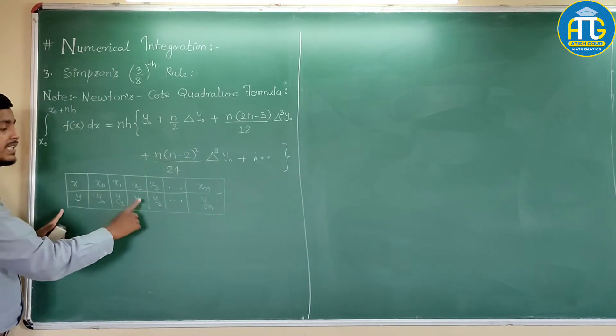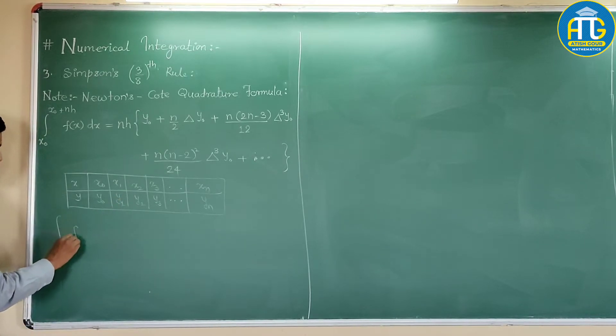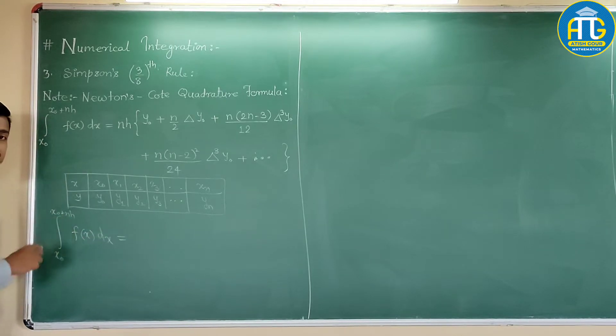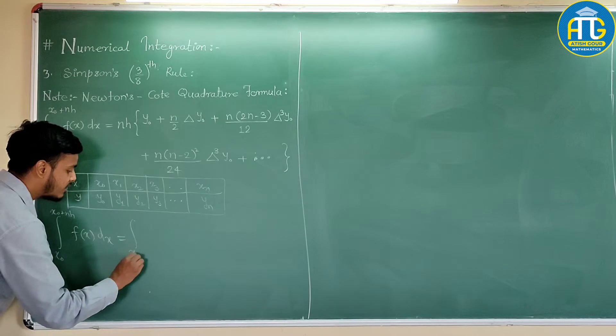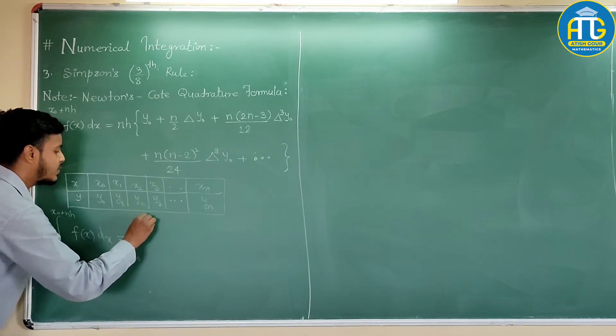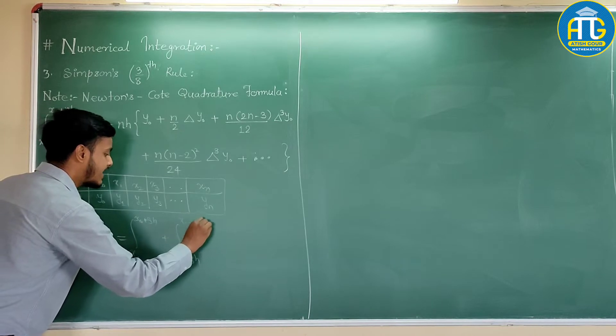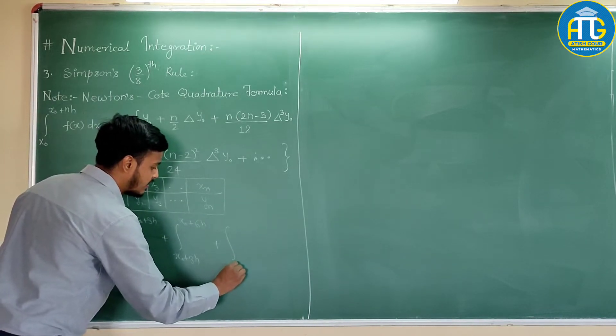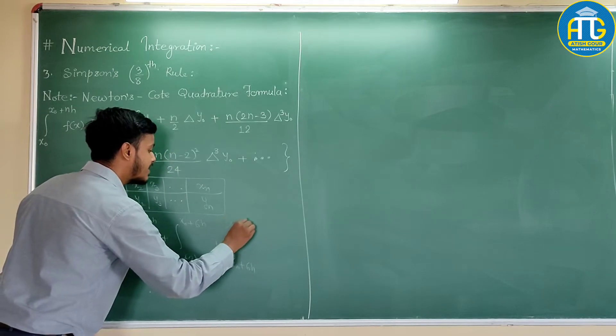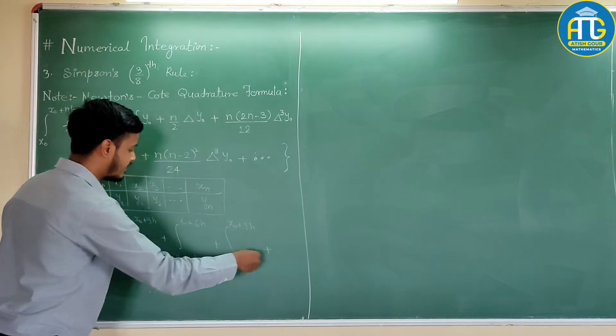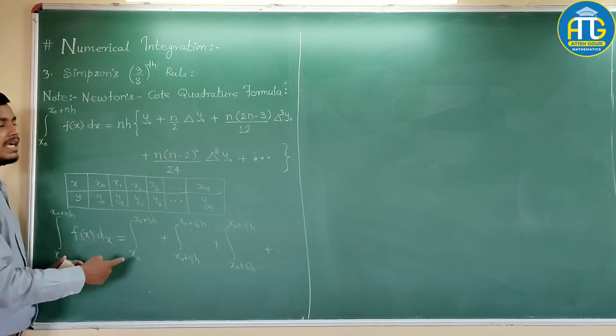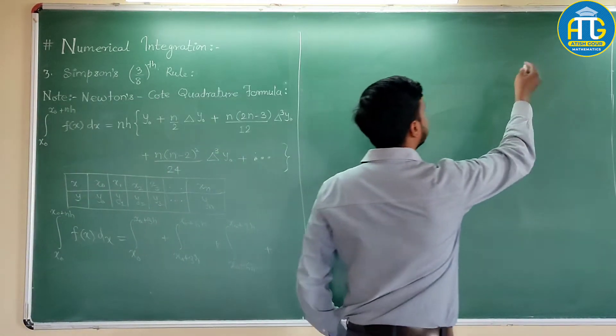So suppose you are given some data and you have to find out the integration of the integrand f of x from the limit x0 to xn, that we can write as x0 plus nh. So what you need to do is you need to divide this interval like integration from x0 to x0 plus 3h, plus integration from x0 plus 3h to x0 plus 6h, plus integration from x0 plus 6h to x0 plus 9h, and so on. And then we will sum up all these values.